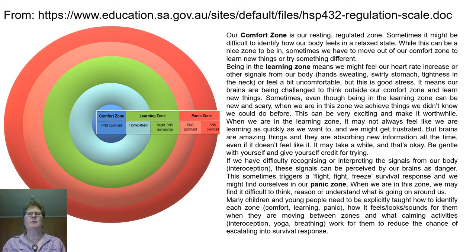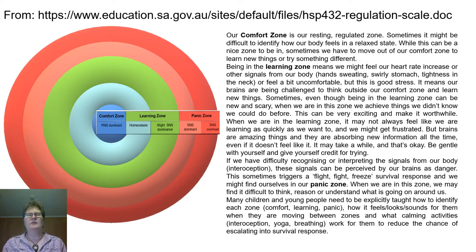Then we move into the not-so-good levels of stress, which we call the panic zone — when you're sympathetic nervous system dominant, not slightly but considerably dominant. In the beginning of the panic zone — low level panic — you can still be co-regulated or self-regulate. However, when you go into sympathetic nervous system overload, you absolutely cannot think, control your emotions, or your actions.